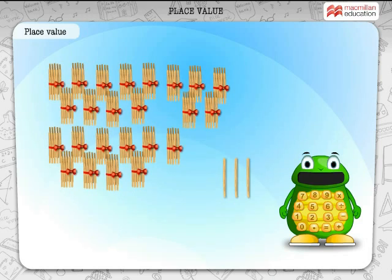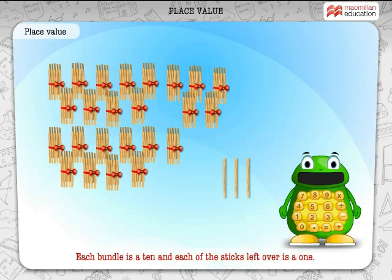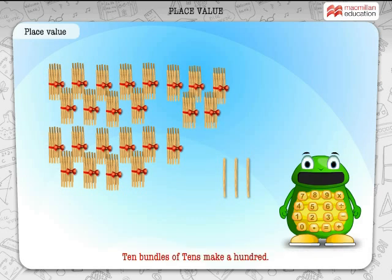After making the bundles, we find that some of the sticks are left over. Each bundle is a 10 and each of the sticks left over is a 1. Now, 10 bundles of tens make a 100.